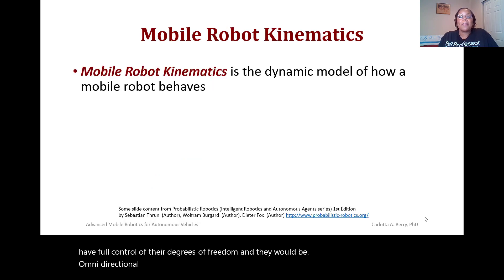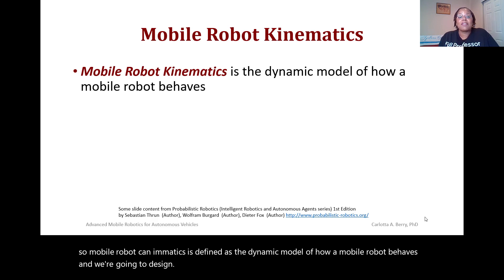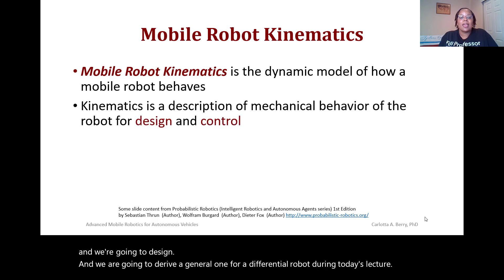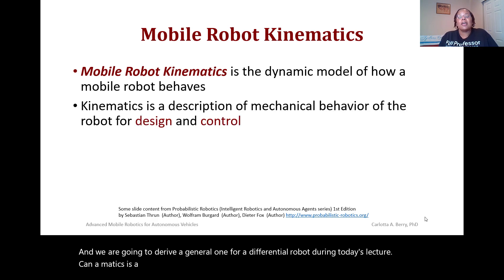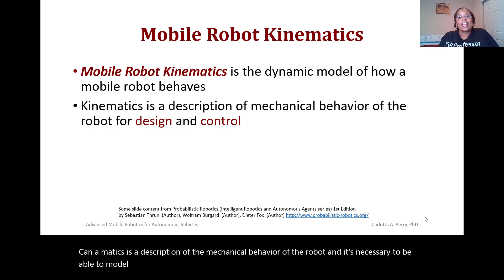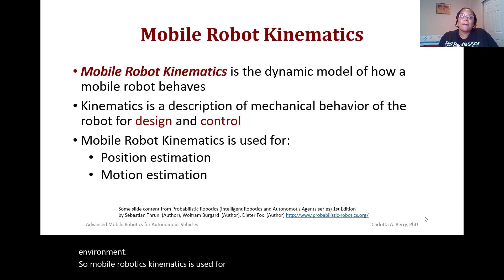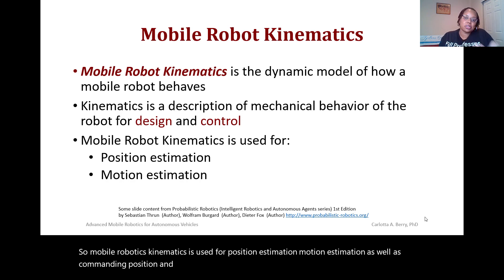Mobile robot kinematics is defined as the dynamic model of how a mobile robot behaves, and we're going to derive a general one for a differential robot during today's lecture. Kinematics is a description of the mechanical behavior of the robot, and it's necessary to model this in order to design and control a robot to move to any certain pose. Mobile robotics kinematics is used for position estimation, motion estimation, as well as commanding position and motion to get to a certain location.